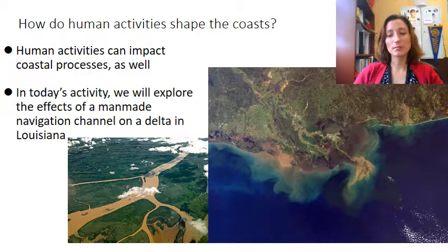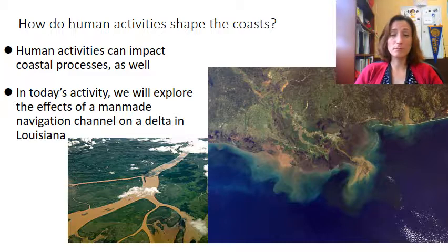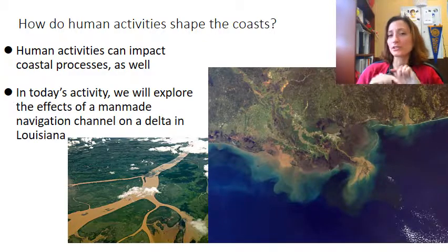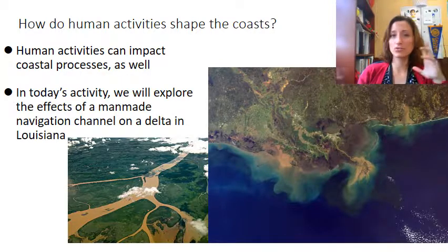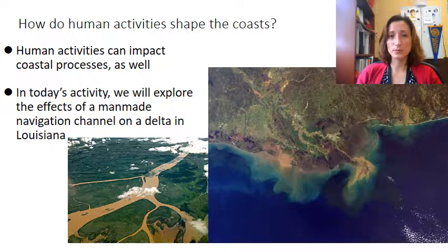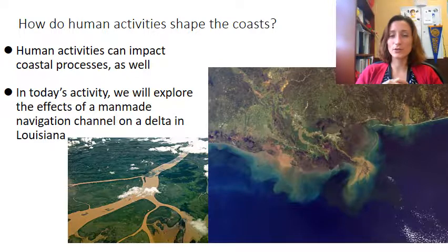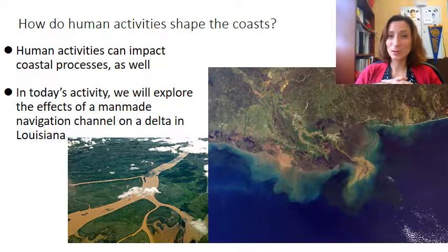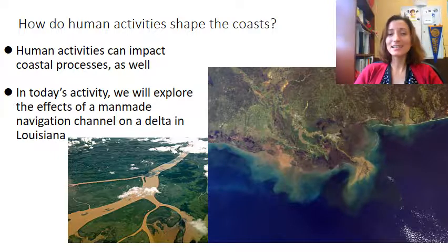Human activities can also shape the coast. The Earth is inhabited by over 7 billion people, and half of us live within 100 kilometers of any coastline in the entire world. The other half live close enough to rivers, lakes, and streams that have a direct influence on the world's oceans. We are very intricately connected to the oceans and coastlines around the world, and many human societies located along coasts do change this environment. In today's activity, you're going to further explore the effects of a man-made navigation channel on a delta in Louisiana.